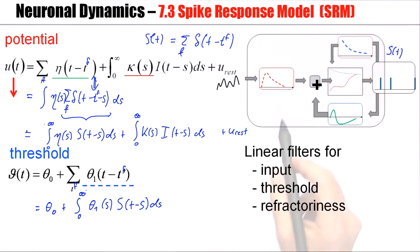So, the three filters, the filter kappa here, the filter eta here, the filter theta_one here, all are treated in a parallel fashion. These filters are used in convolutions. Convolutions of the input with the filter kappa, convolutions of the output spike train with the filter eta and with the filter theta_one.